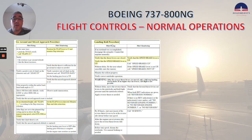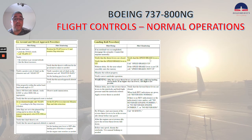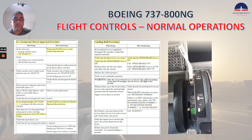Now the landing roll procedure. The pilot flying verifies that the speed brake lever is up, and the pilot monitoring verifies that the speed brake lever is in the up position — it should be here.